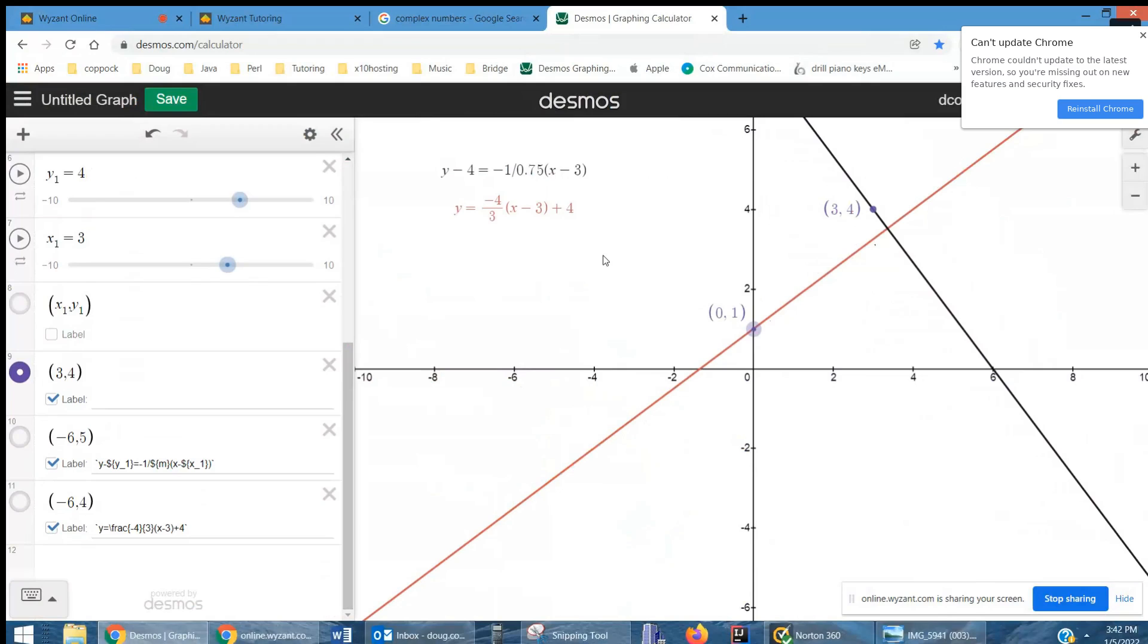Here's another equation where I've written it in point-slope with the minus four moved to the right side. Okay. There you go. Hope that gives you some idea of what's happening.